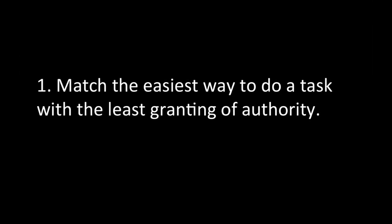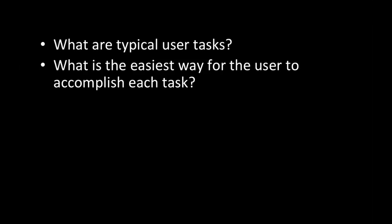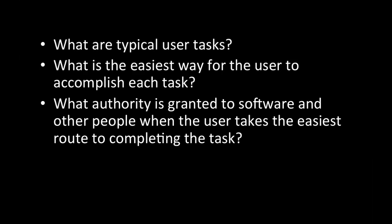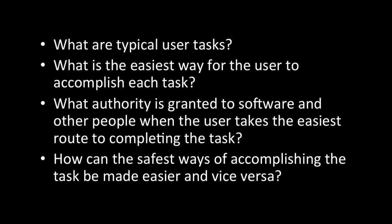When you're building a system, we're going to look at some guidelines about how to grant authority to keep systems more secure. The first guideline is to match the easiest way to do a task with the least granting of authority. Some questions to think about: What are the typical user tasks? What's the easiest way for the user to accomplish each task? Ultimately users are going to do tasks in the easiest possible way, so if you understand what that is, you can predict what users will do. Then you need to think about what authority is granted to software and other people when the user takes the easiest route to completing the task. And finally, how can the safest ways of accomplishing the task be made easier — and vice versa, how are the easiest ways made to also be the safest?